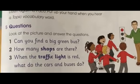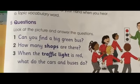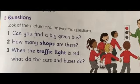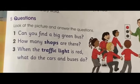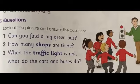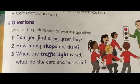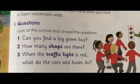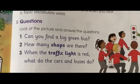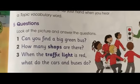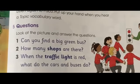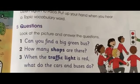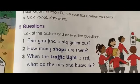Now, my students, move to exercise number five: Questions. Look at the picture and answer the questions. Question number one: Can you find a big green bus? Now, my students, point to the big green bus. Question two: How many shops are there? There are three shops. Number three: When the traffic light is red, what do the cars and buses do? Cars and buses, they stop and wait.